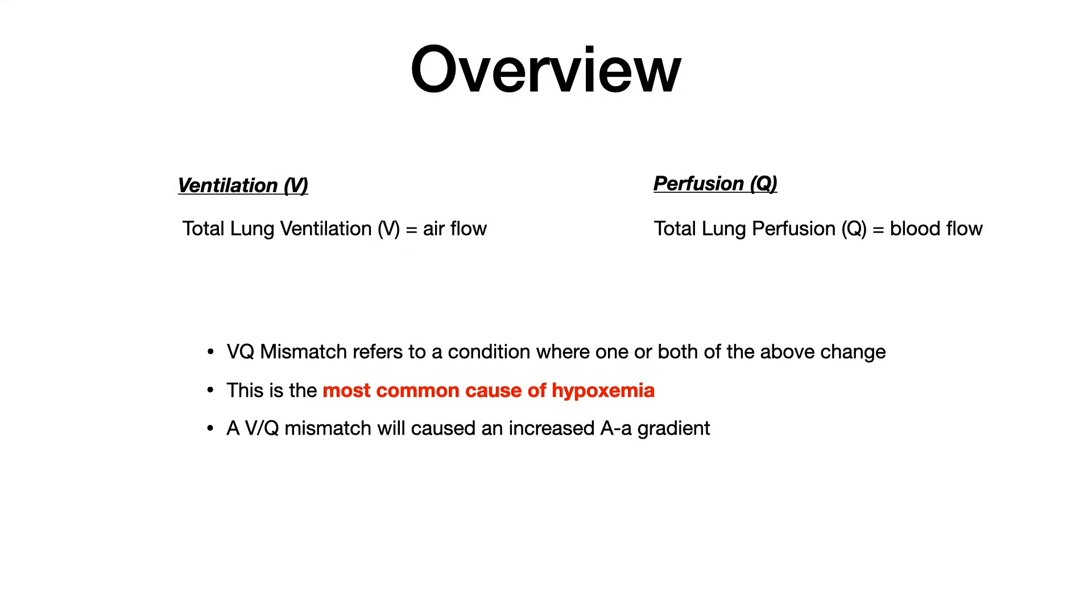Now a VQ mismatch refers to a condition where one of either ventilation or percusion changes. And this happens to be the most common cause of hypoxemia. And on your exam, if there's a VQ mismatch, your patient will have an increased AA gradient. Now for the purposes of this video, we're not going to talk about AA gradients. So we'll just put that to the side for now. These are interrelated topics, but they are completely different topics. So a VQ mismatch is not the same as an AA gradient. Again, a VQ mismatch is just either ventilation or percusion is changing somewhere in the lung, either due to a normal physiological condition, or in 99% of the cases on your exam, due to some type of pathology.